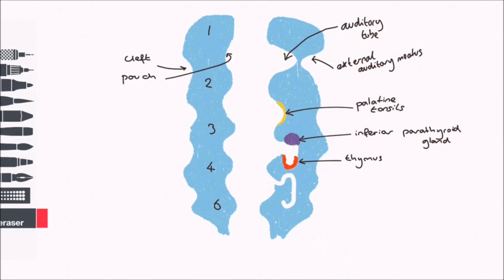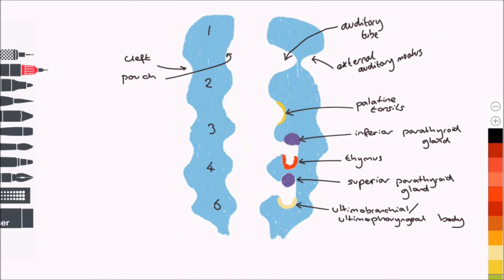Like the third pouch, the fourth also bifurcates into a dorsal and ventral wing. The dorsal region becomes the superior parathyroid gland, and the ventral region becomes the ultimobranchial or ultimopharyngeal body, which forms the parafollicular cells of the thyroid.